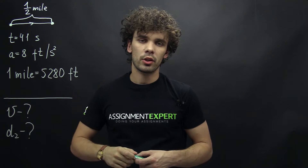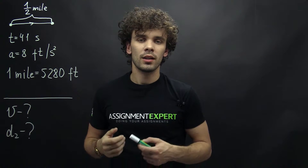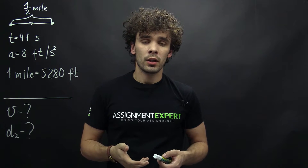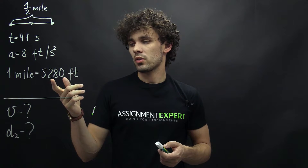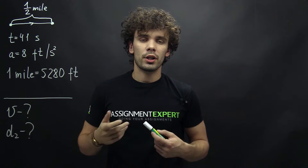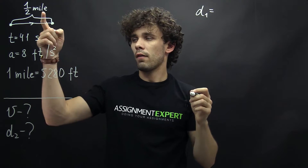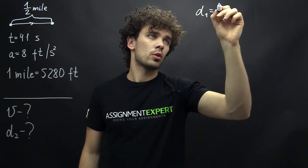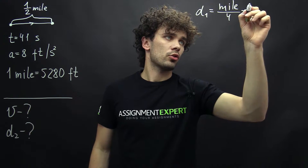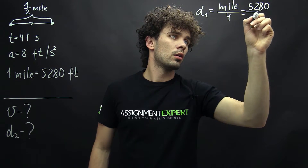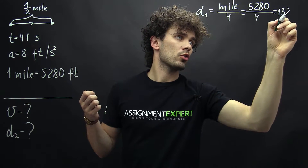What is the max speed the train can reach during this travel, and what distance does it cover with this max speed? Let's begin. First of all, one mile is the unit of length in England and one mile equals 5,280 feet. Therefore, in our case, halfway between the stations D1 equals half a mile over 2. So we have mile over 4, and this is 5,280 over 4, which gives us 1,320 feet.